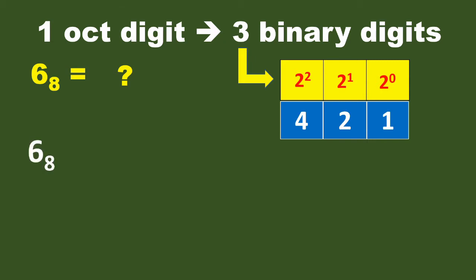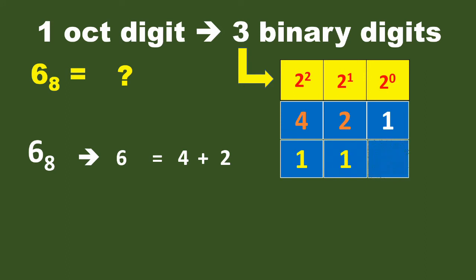So 6 in octal is also written as 6 in the decimal number system. Now from these switches — 1, 2, and 4 — which switches, when added together, will result in 6? We know that it is 4 and 2, since 4 plus 2 equals 6. So these switches must be switched on to generate the number 6. Therefore, we switch on switch 4 and switch 2, while switch 1 will be 0 — it will not be switched on.